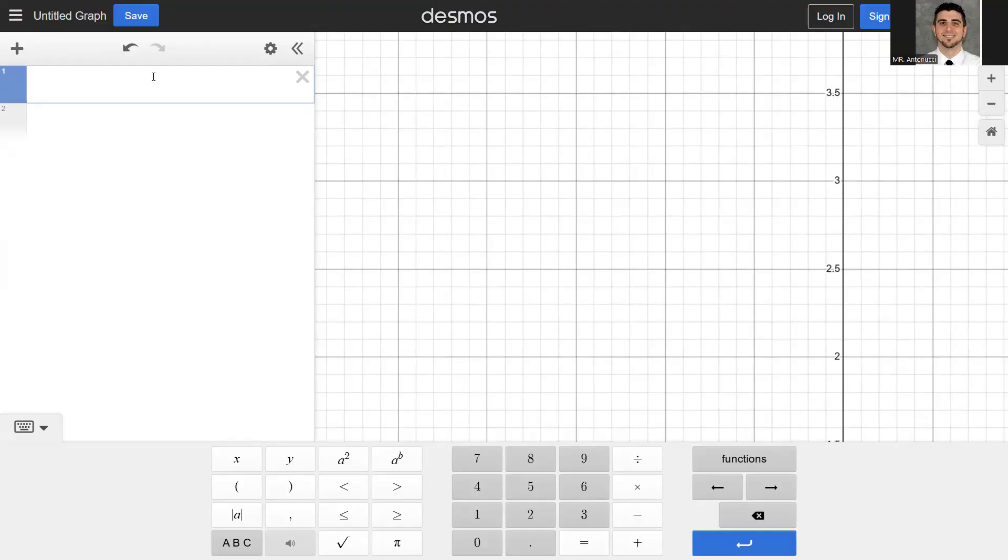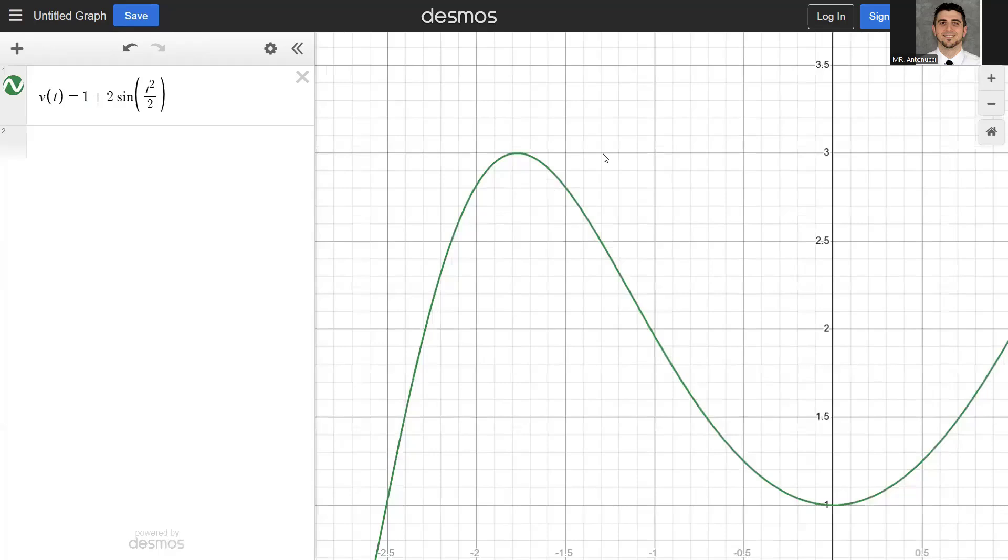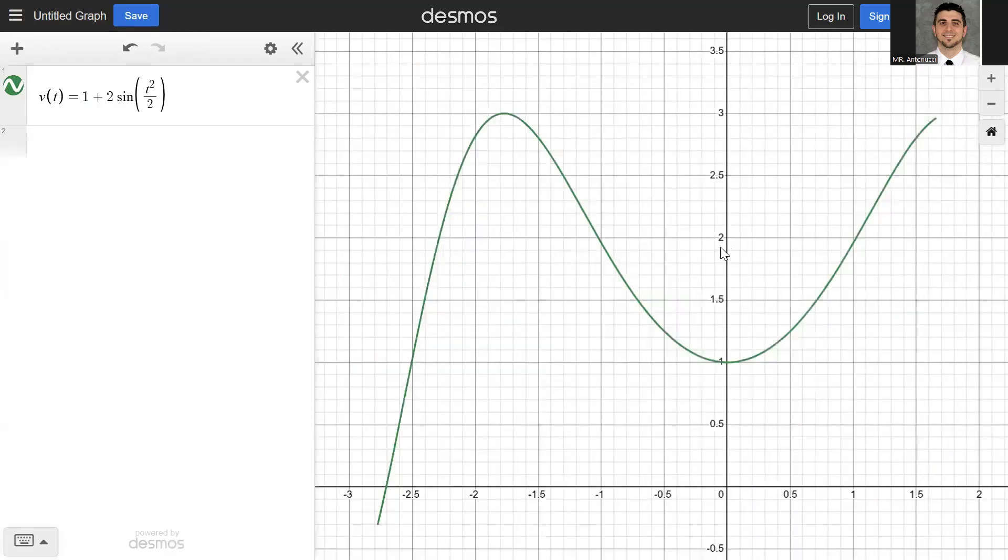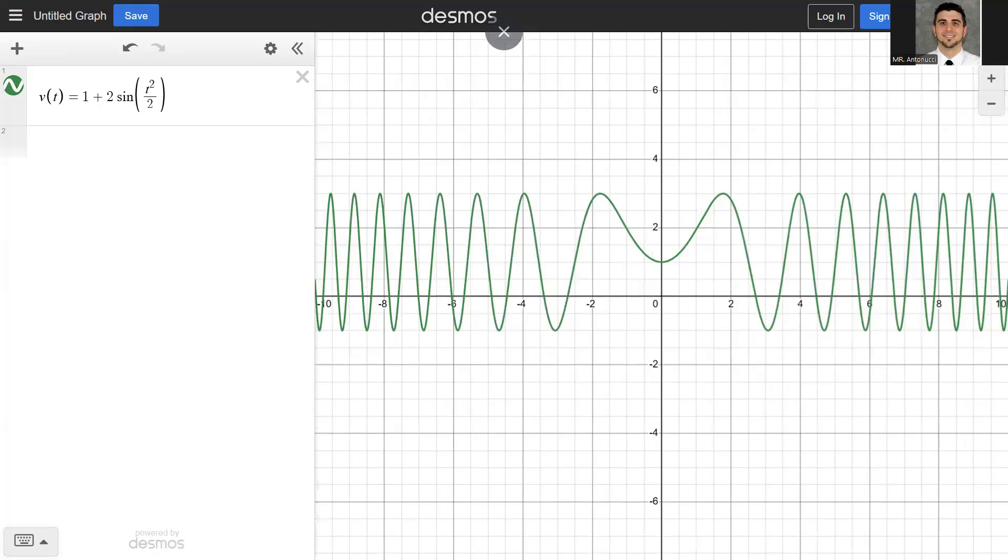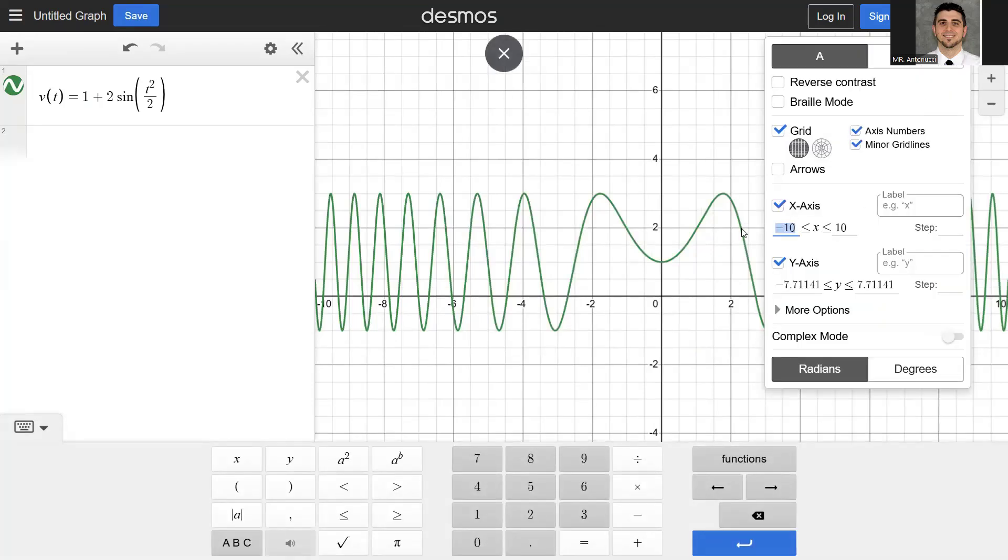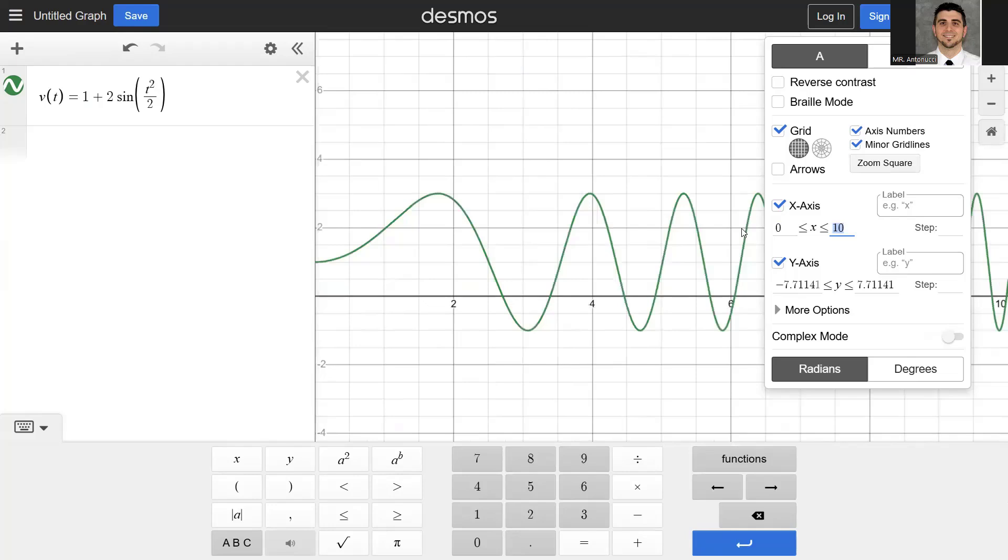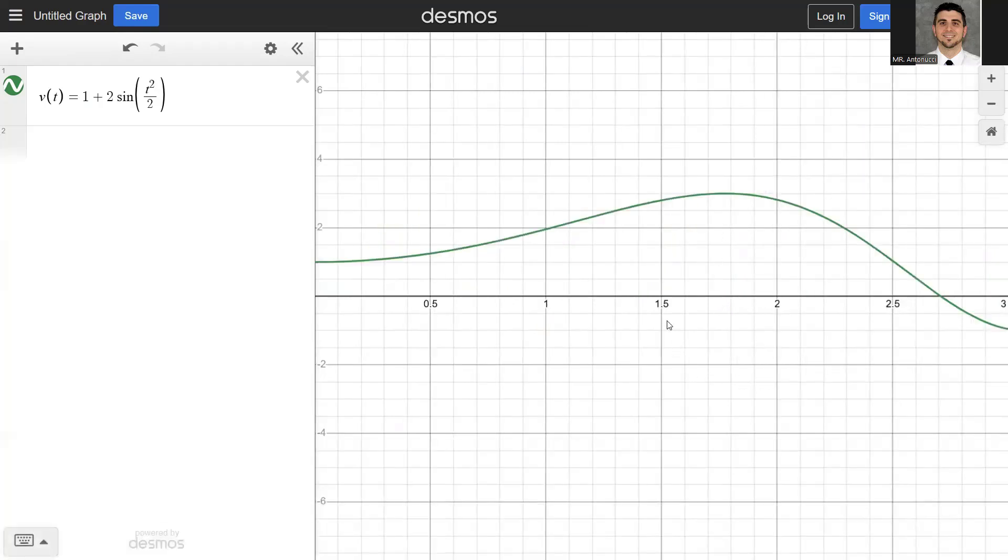So we're in Desmos now. And the first thing we're going to do is type in the function v(t) = 1 + 2sin(t²/2). And we want to find all times in the interval 0 to 3 where the particle changes direction. So if you hit the home button, that's going to show you the home viewing window. If you hit the little wrench here, you can change the x-axis to go from 0 to 3. So you can see that the particle, the velocity changes sign at this point right here. And notice it gives you that value of that point.